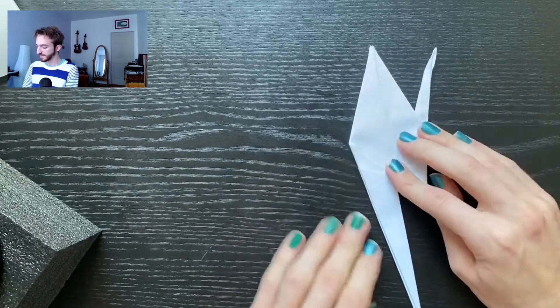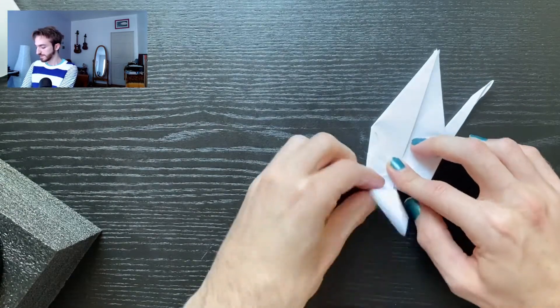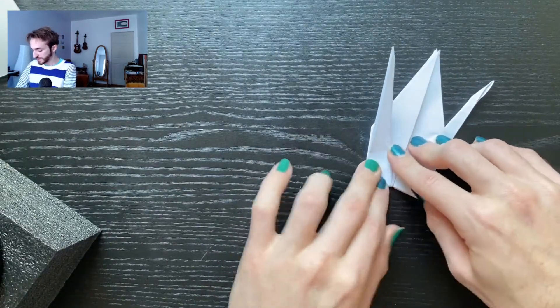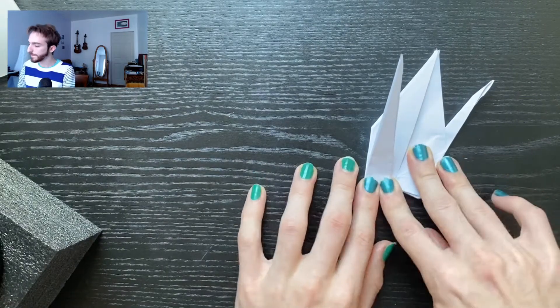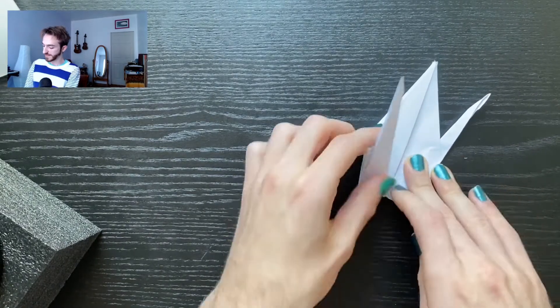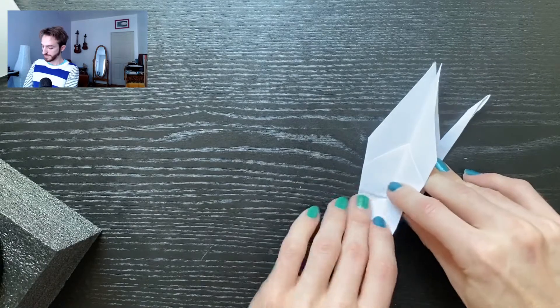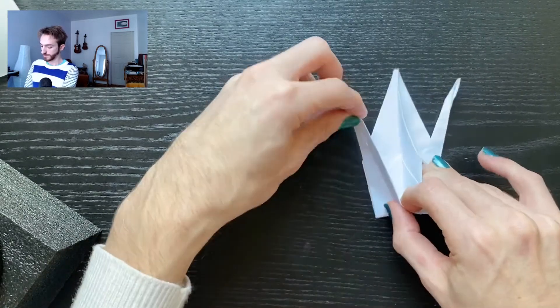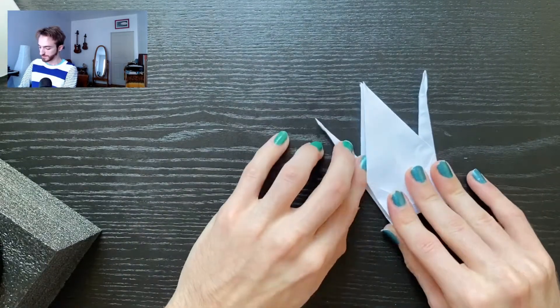And we're going to do the exact same thing on the other side. So fold it up, get that crease real nice, fold it back down, open it up, through the middle, and close it out.